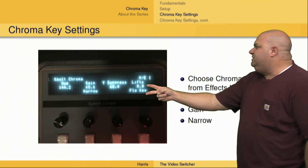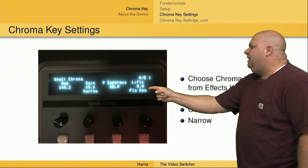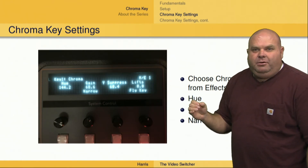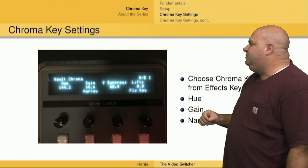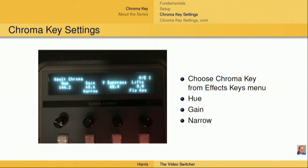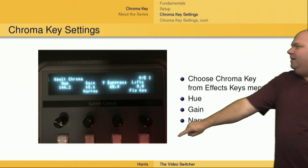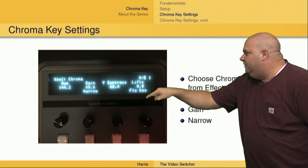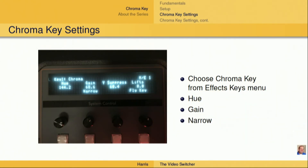Lastly, we've got two other controls. We've got the lift, which is generally going to be at zero on an ATEM switcher. And then the fly key — the fly key would only be pressed using this button below the fly key soft menu, and we're only going to use that if we've got a DVE that we're going to be using.